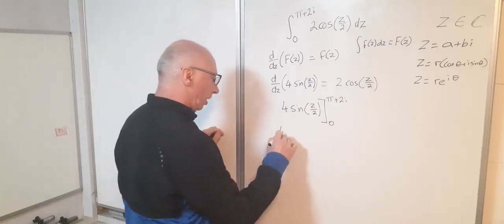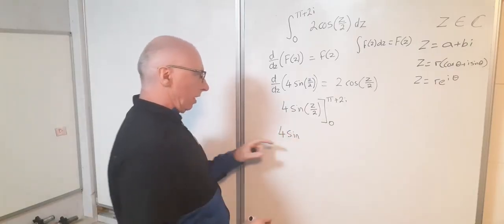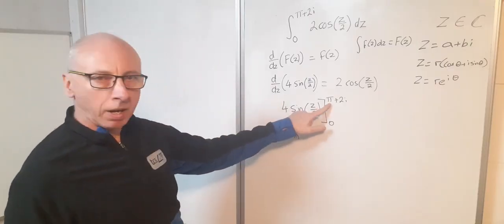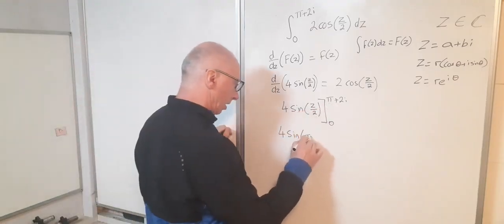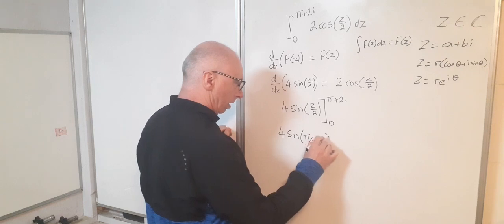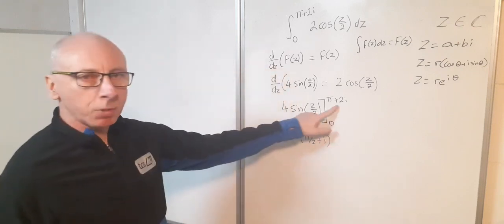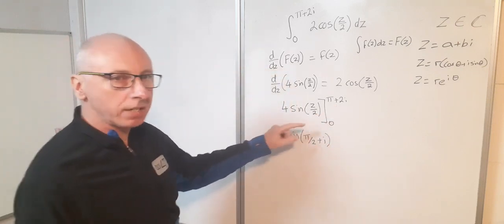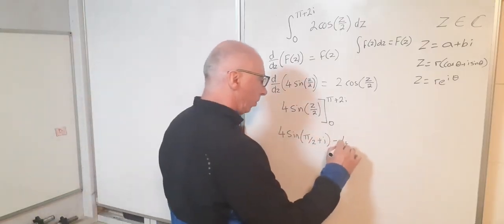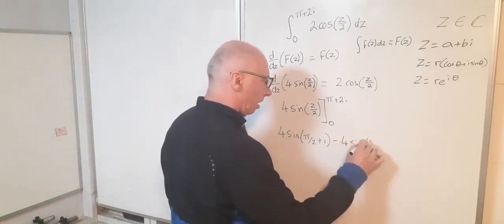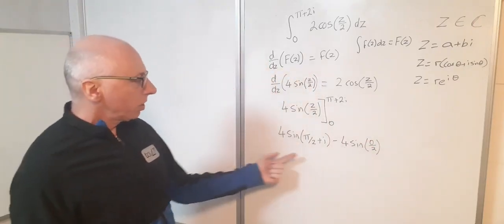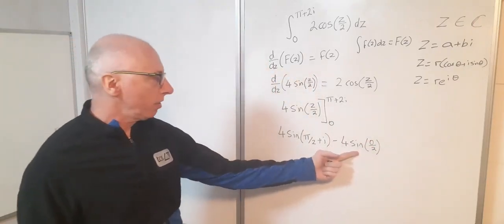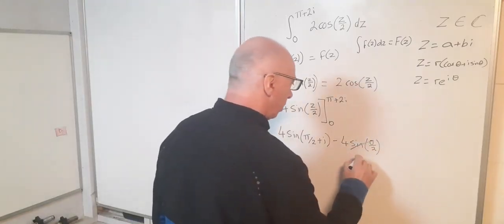So I've got 4 times sine, so z over 2, that's going to give me pi over 2 plus i. So that's what happens when I plug that in. Now I need to subtract the case when z is 0. So minus 4 times sine of 0 over 2. Well we can see straight away sine of 0 is 0, so this is going to turn into 0.